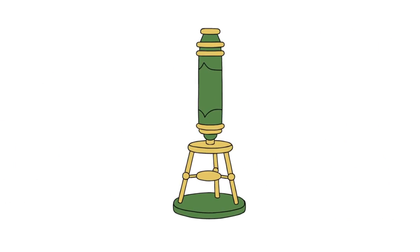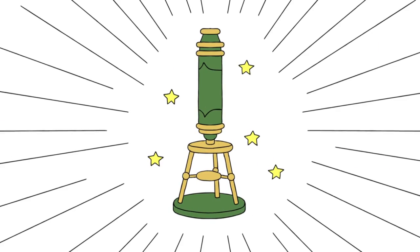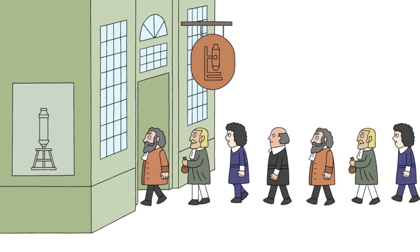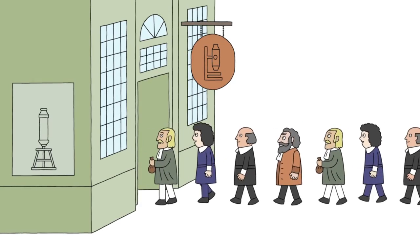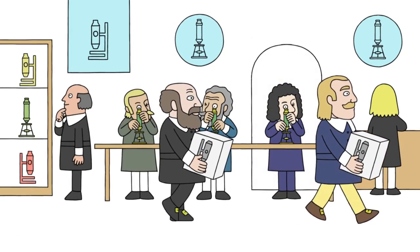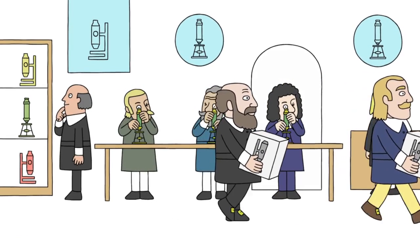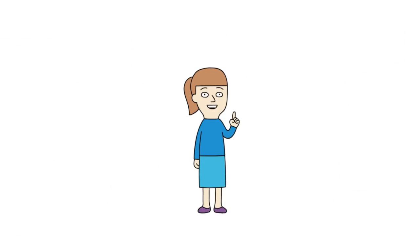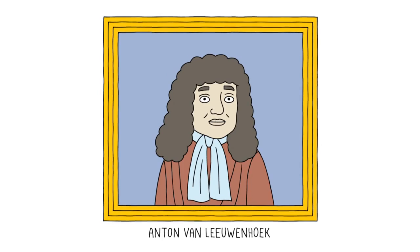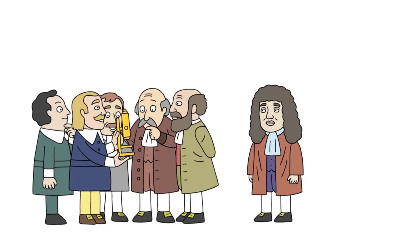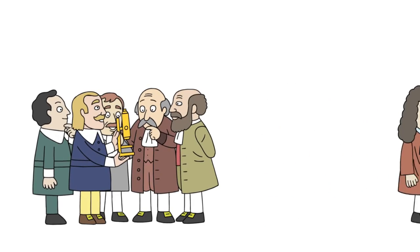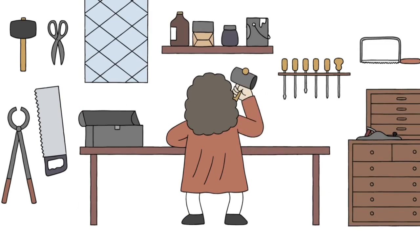Despite this, the microscope soon became a hot item that every naturalist or scientist at the time wanted to play with, making it much like the iPad of its day. One such person was a fellow Dutchman by the name of Anton van Leeuwenhoek, who heard about these microscope doohickeys and instead of going out and buying one, he decided to make his own.